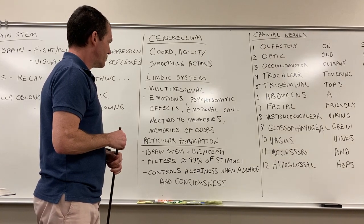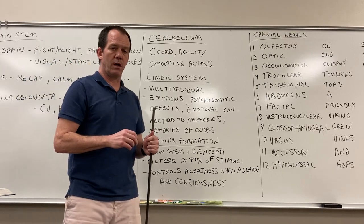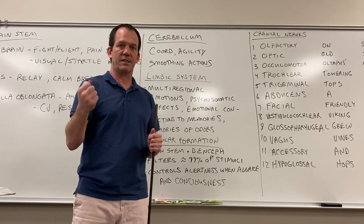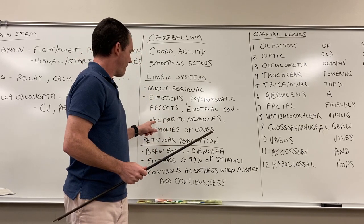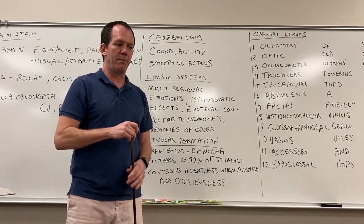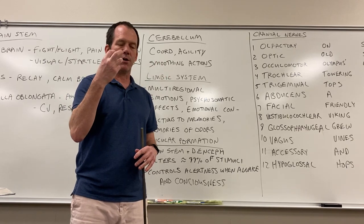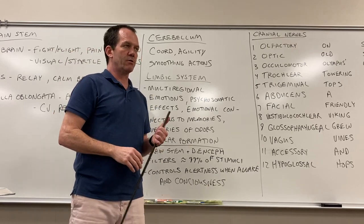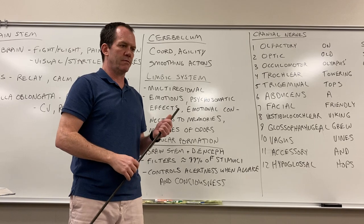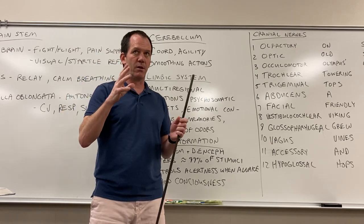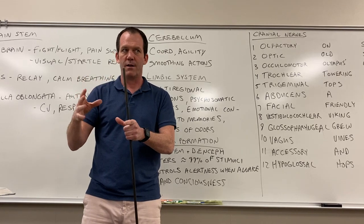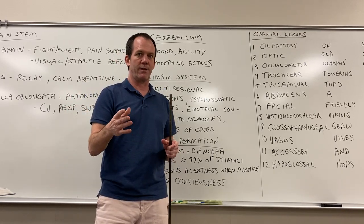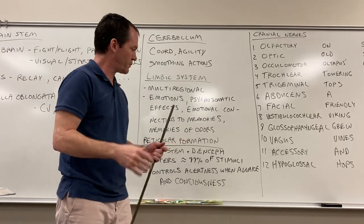The limbic system also handles emotional connections to memories. When you remember a time in your life that you liked or didn't like, you feel an emotion — that's generated here. Memories of odors are particularly strong: you might be walking along and suddenly get a smell that takes you back to a place 10 years ago. I once smelled something that reminded me of a specific street or restaurant in South Korea, and I could suddenly picture the buildings.